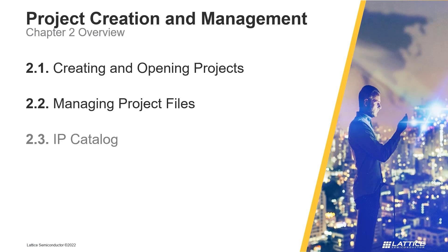In the third section of the chapter, called IP Catalog, we will discuss Radiant's IP Catalog and how it can be used to download and install IP. In the fourth section, Implementing IP, the general process for generating an IP component and instantiating it in a design are reviewed.